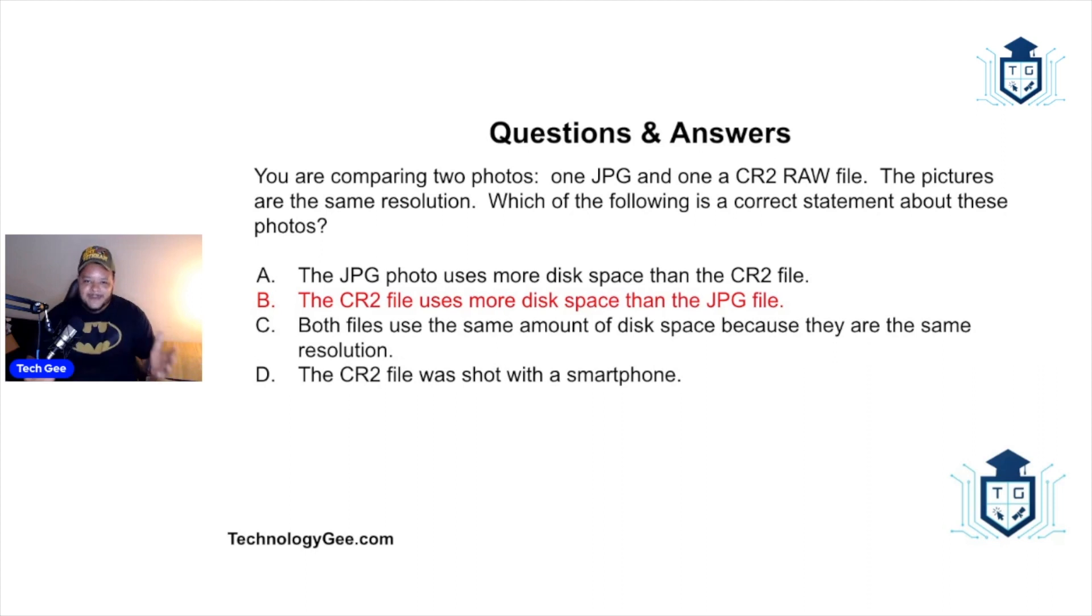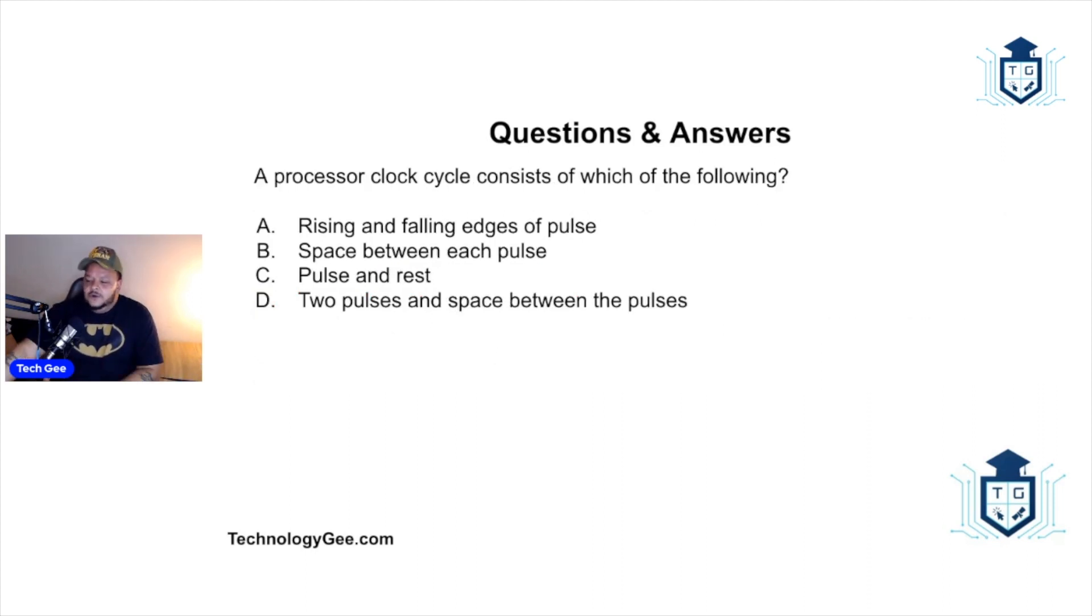A processor clock cycle consists of which of the following: rising and falling edges of a pulse, space between each pulse, two pulses and a space between the pulses? The correct answer is a pulse and a rest. Here is a typical digital signal for a clock cycle - you got your pulse and then you got your rest, your pulse and then your rest. It's the up and down motion.